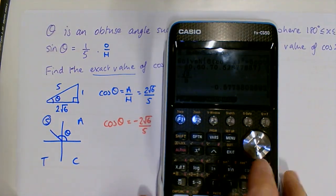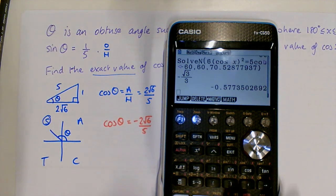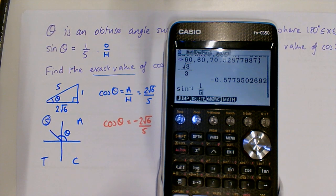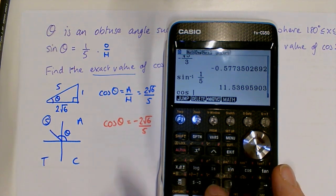And just to show you, on your calculator, you wouldn't get exact values. If we try doing inverse sine of one-fifth, and then we do cos of that,